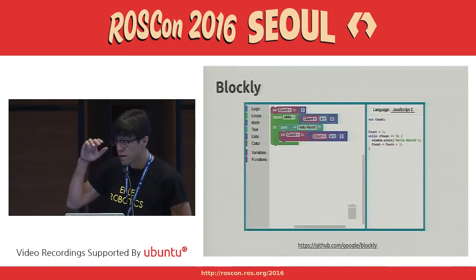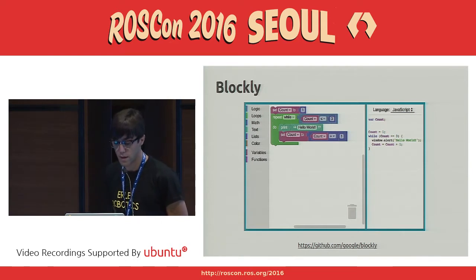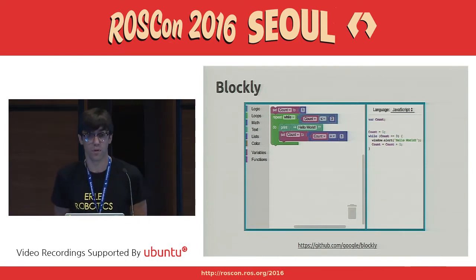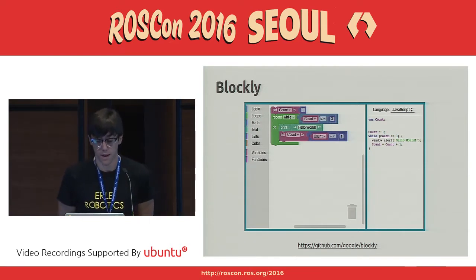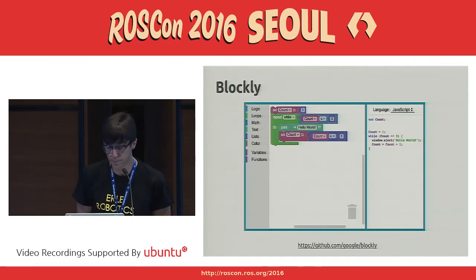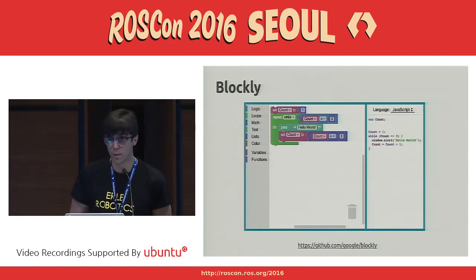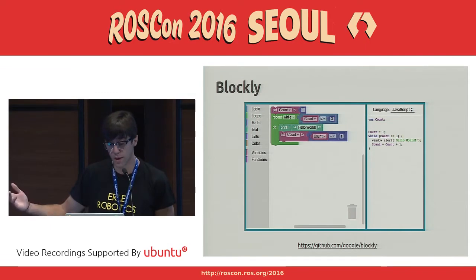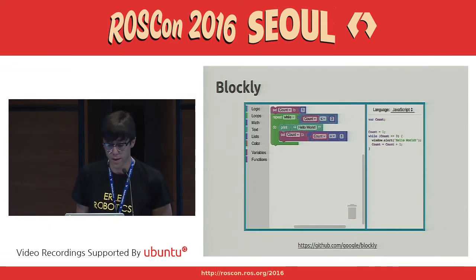Blockly is the second word of the package. It is Google's effort to transform Scratch into a web-based application, allowing web pages to include a visual code editor. In our case, we are going to use Python because it's fully supported by ROS and also by Blockly, and we don't have to compile any code.